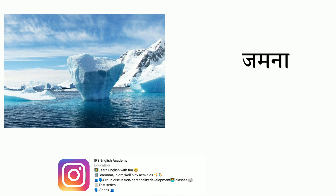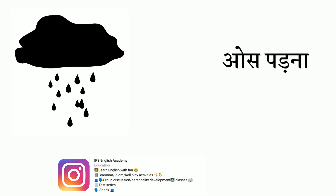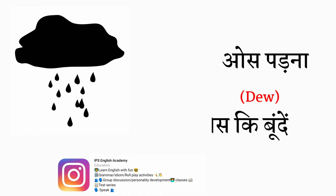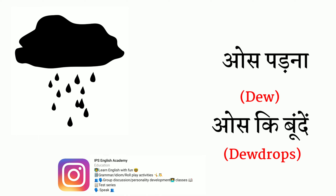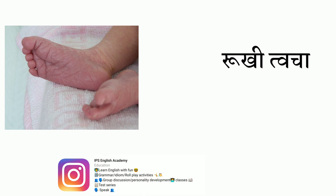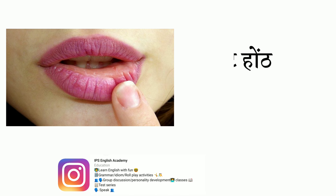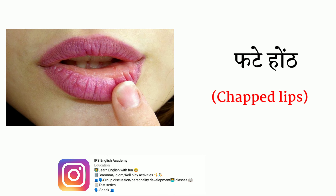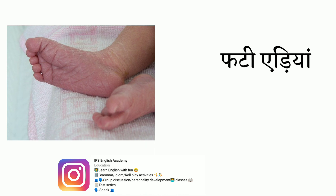The very first word is 'sun ho jana' — that's called numb or numbness. Next we have 'kohara' — that's called fog in English, and it's also called smog. Next we have 'jamna' — in the cold, things freeze, so that's called freeze. And with that, 'os parna' — that's called dew, and the drops are called dew drops.